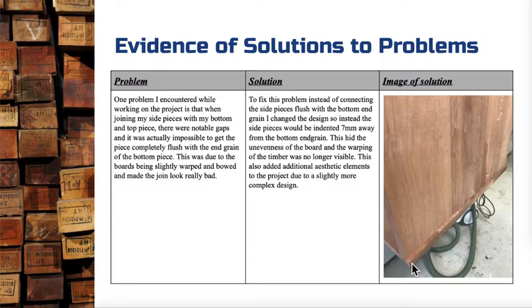Going back to our original criteria for this section — the production phase — we've ticked off the safety requirements and how we complete those, the record of production and how safety fits into that, and the evidence of solutions to problems. From this point forward your folio is complete. The last thing you need to add is your final evaluation, and I look forward to seeing you in the next video where we discuss that. Thanks.